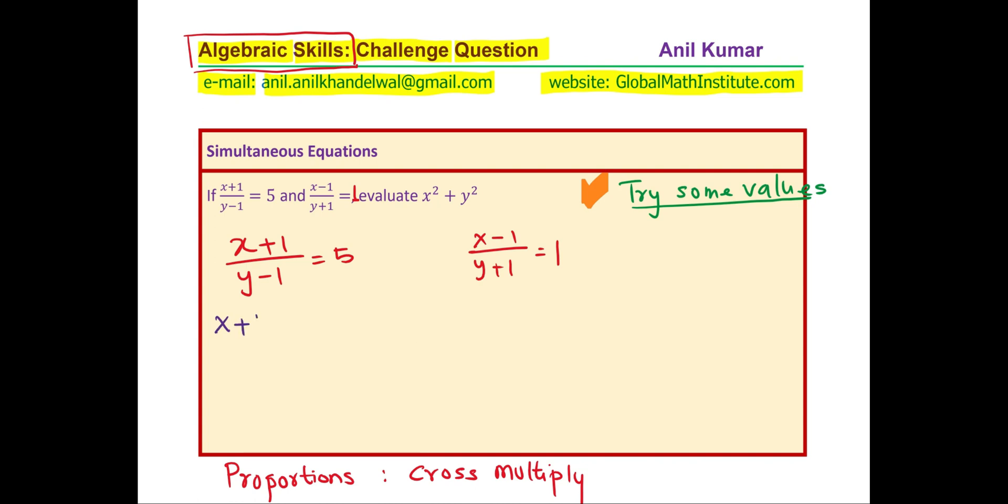So we get x plus 1 equals to 5 times y minus 1, x plus 1 equals to 5y minus 5 and x can therefore be written as 5y minus 5 minus 1 or x is 5 times y minus 6. So, we get one of the equations.